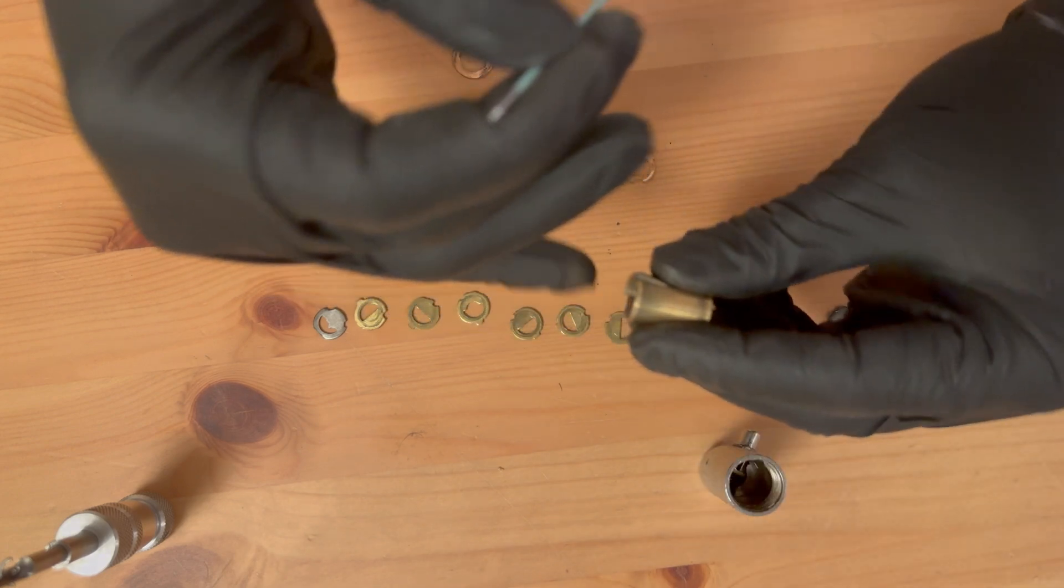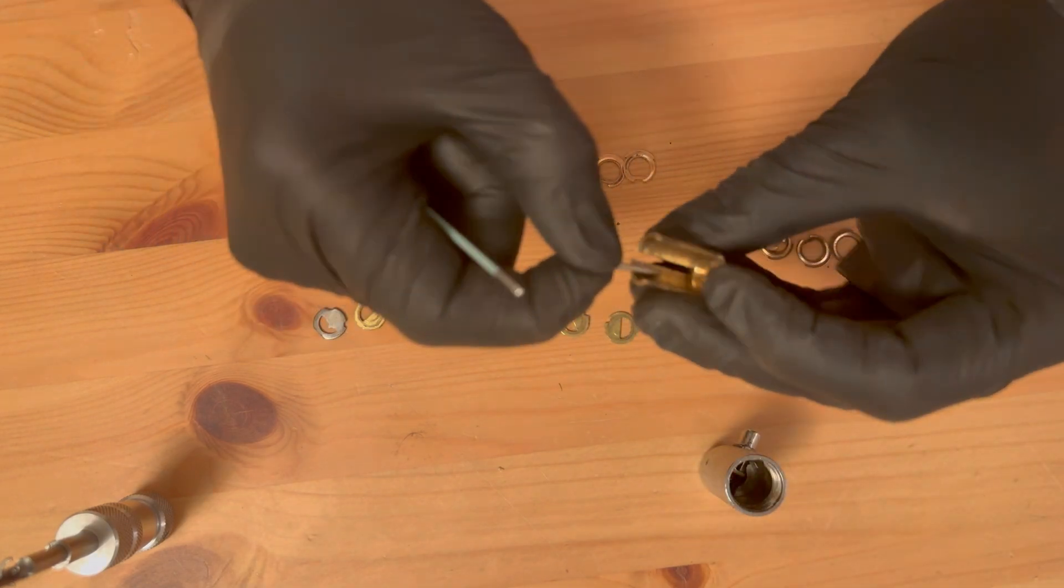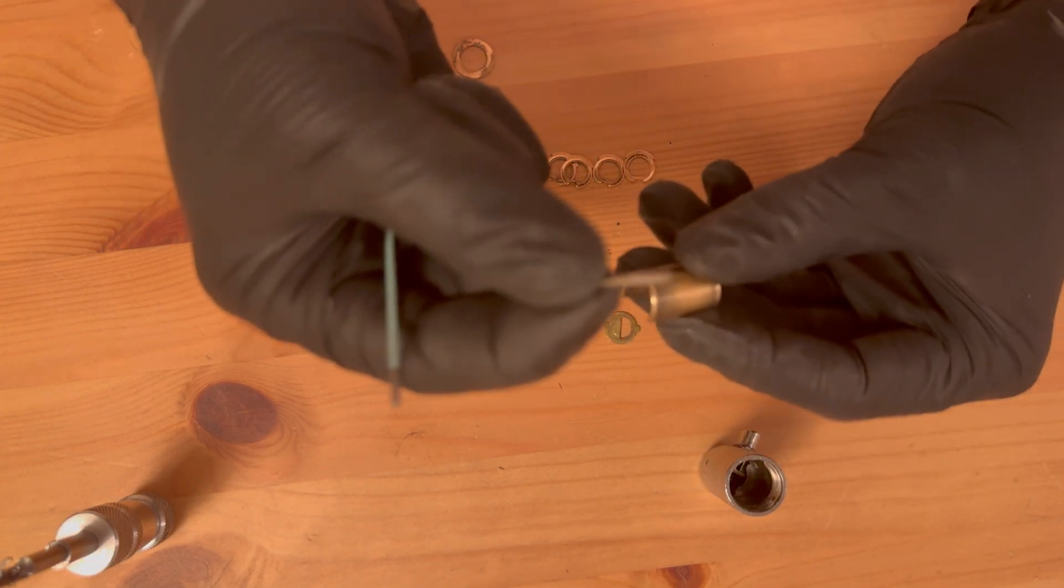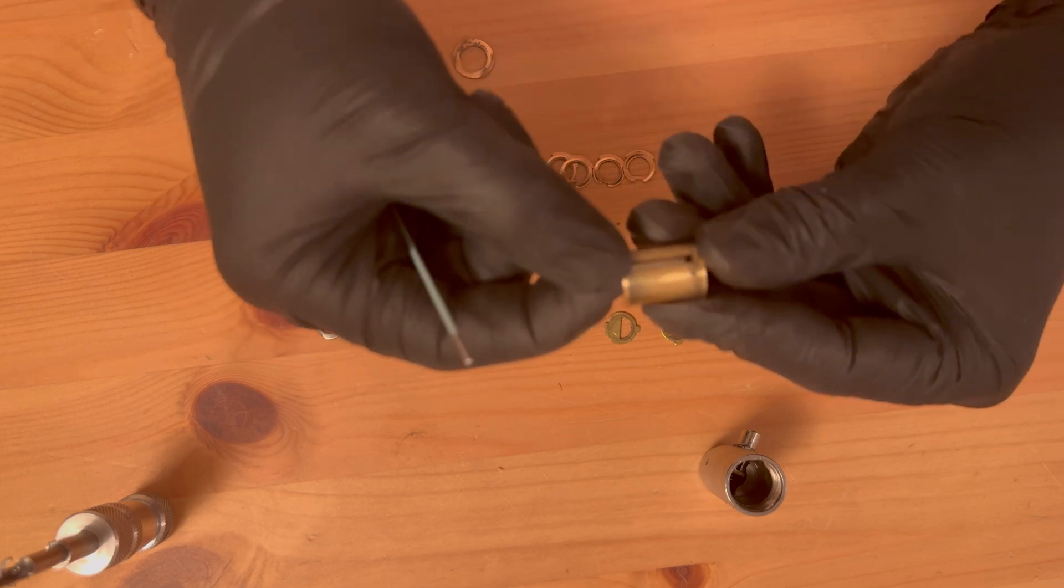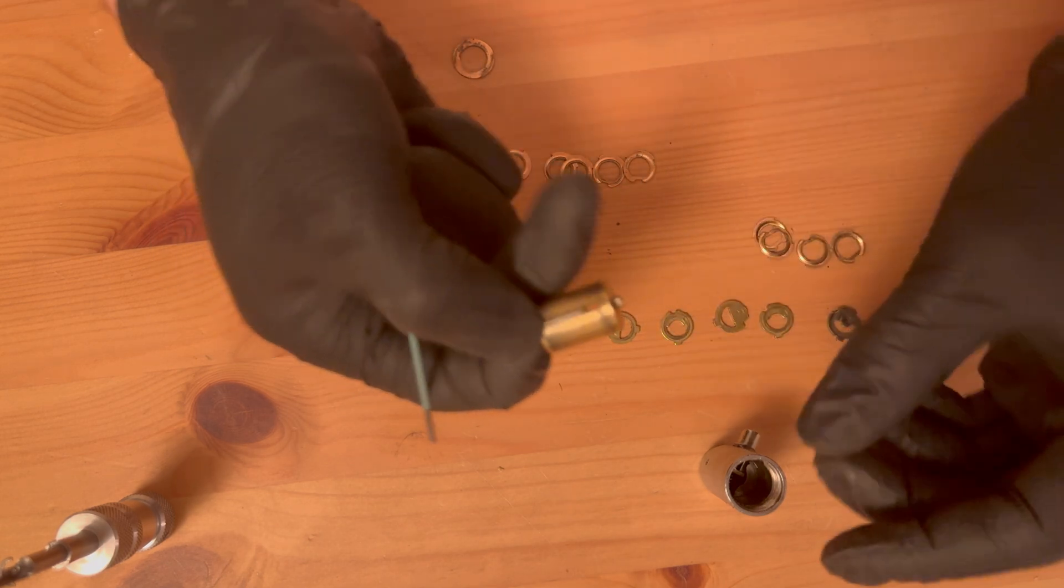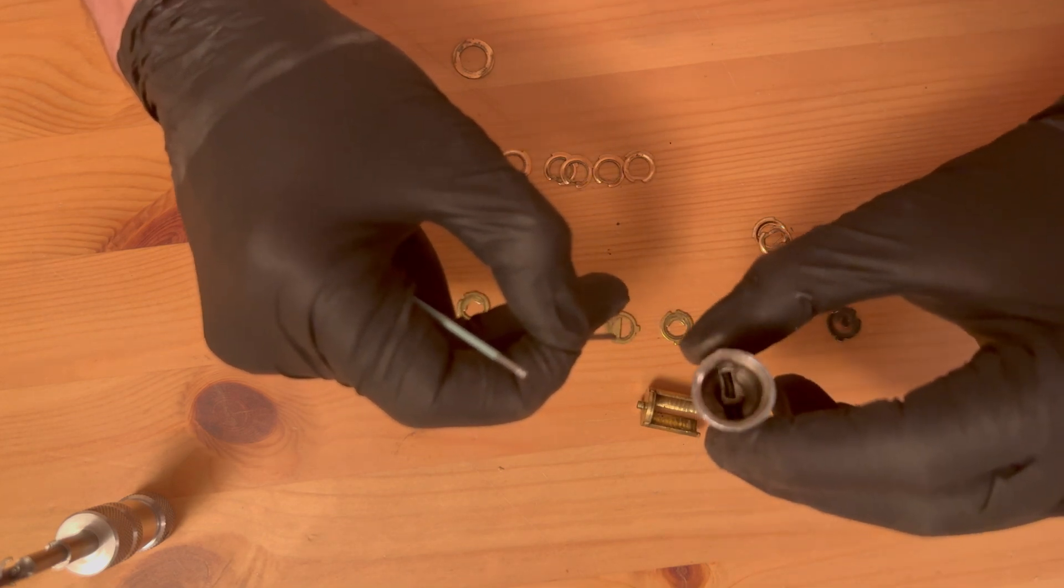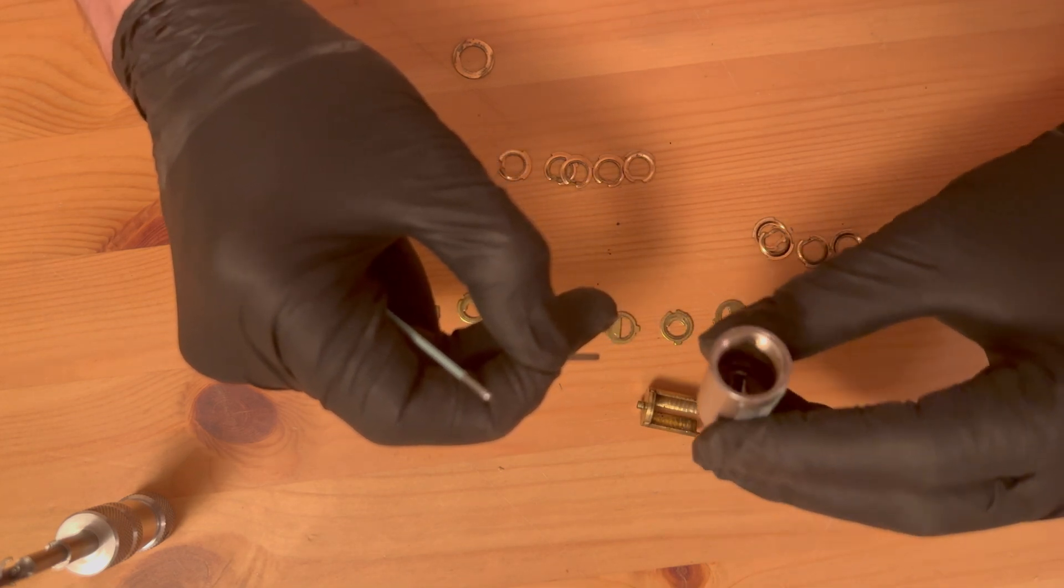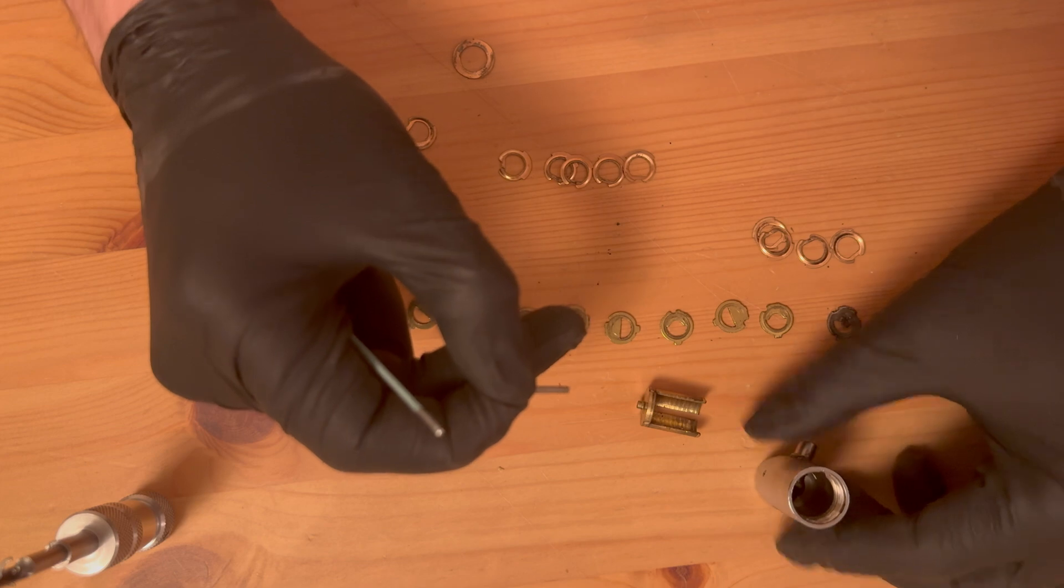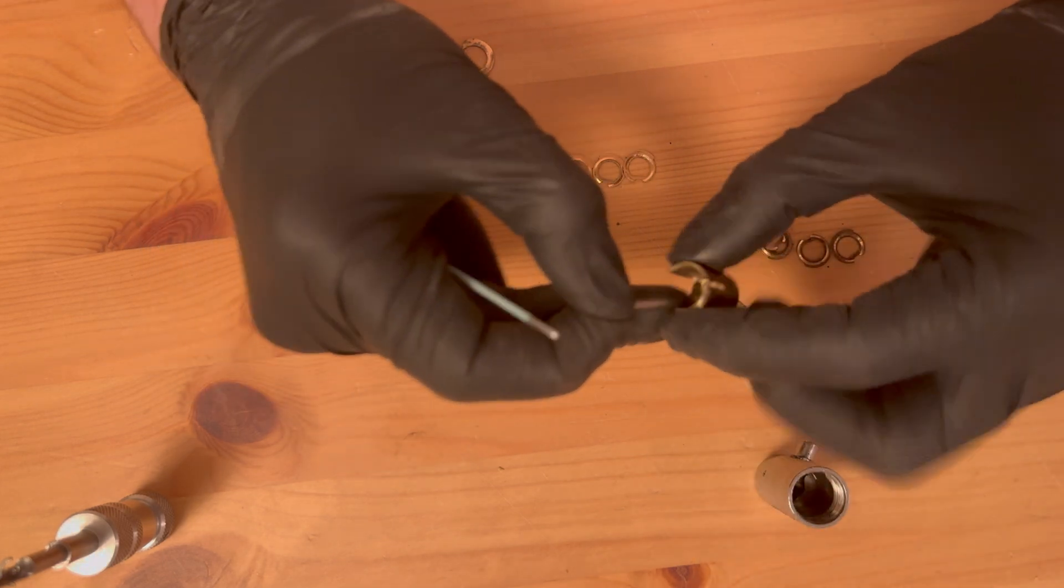So, here is the cam assembly. This is where all of the discs lie. And this is the sidebar, which we were talking about in the beginning of the video. Here is the little spring actuator, all the way at the bottom. And that is the Abloy profile picked.